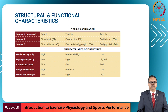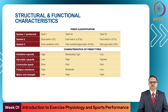The oxidative capacity of type 1 fibers is high, glycolytic capacity is low, contractile speed is slow, fatigue resistance is high, and motor unit strength is low. In type 2a fibers, oxidative capacity is moderately high, glycolytic capacity is high, contractile speed is fast, fatigue resistance is moderate, and motor unit strength is high.